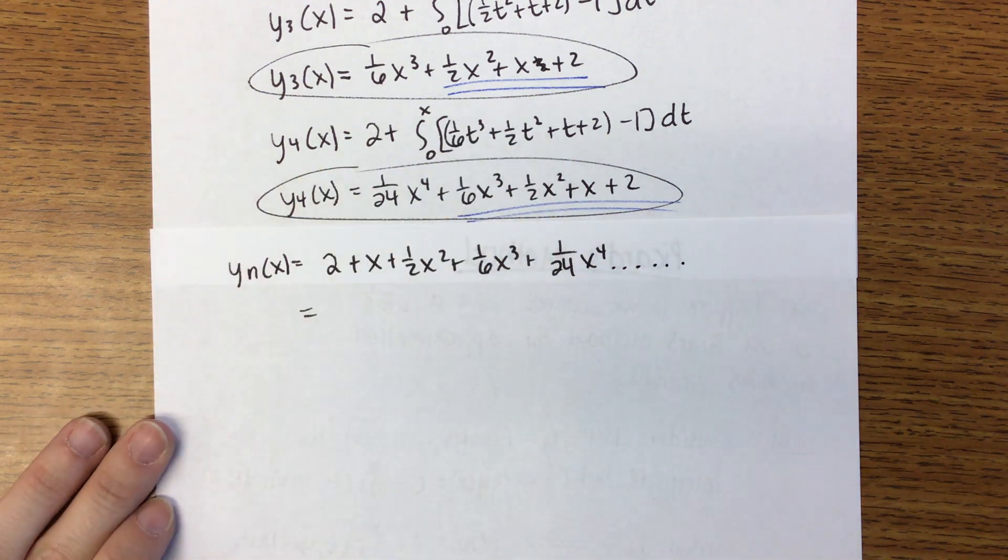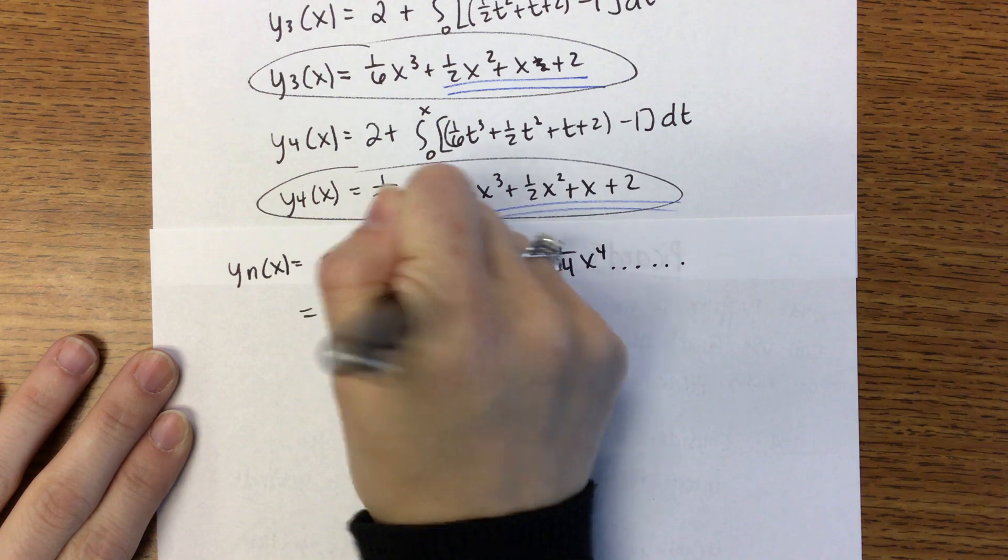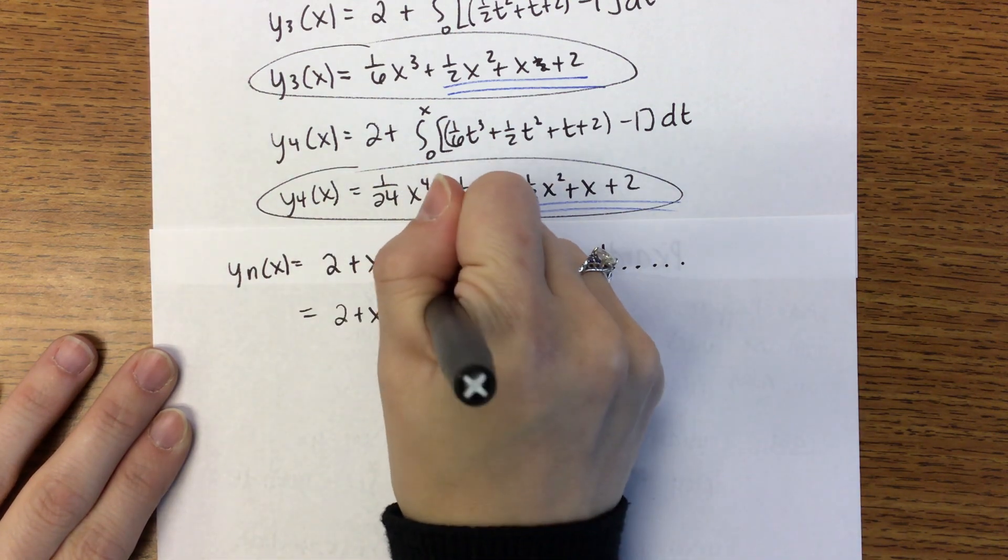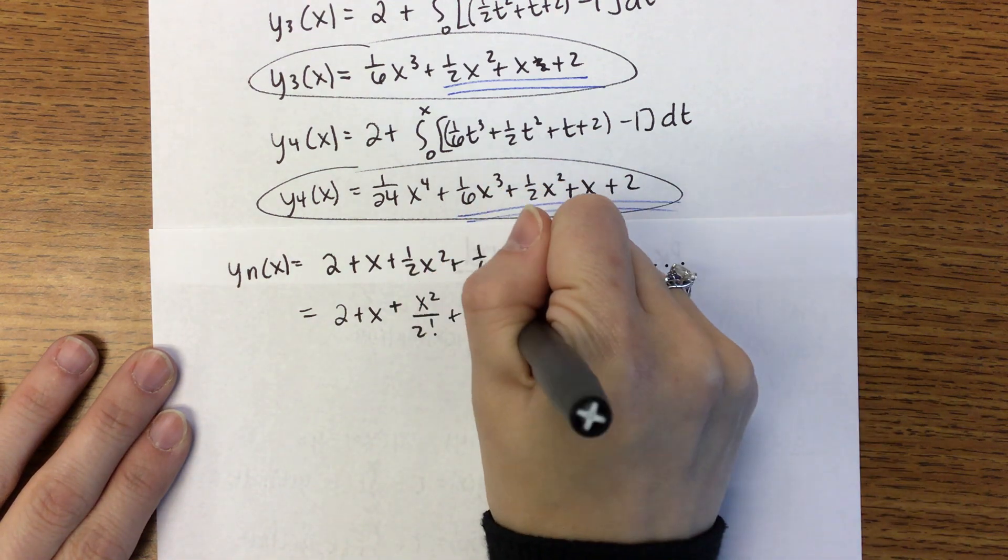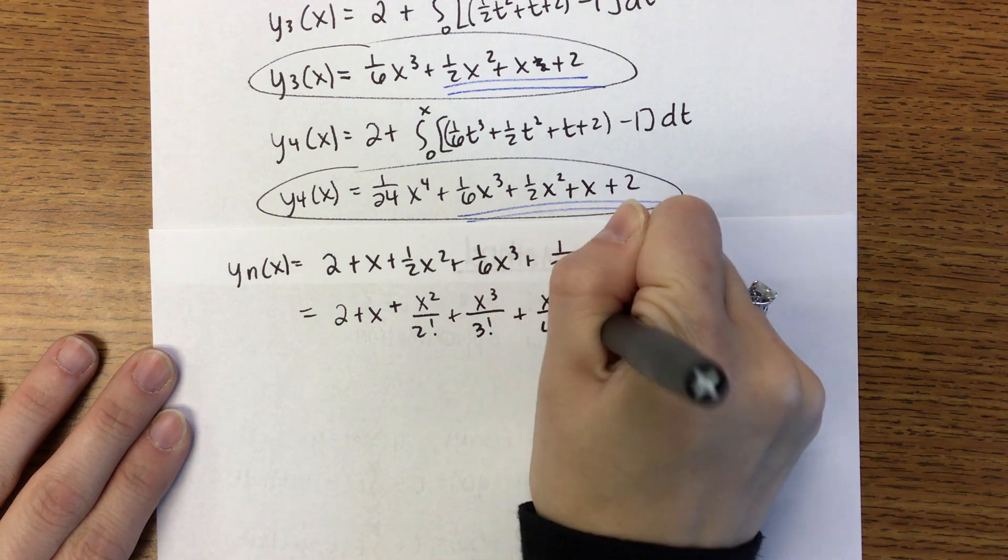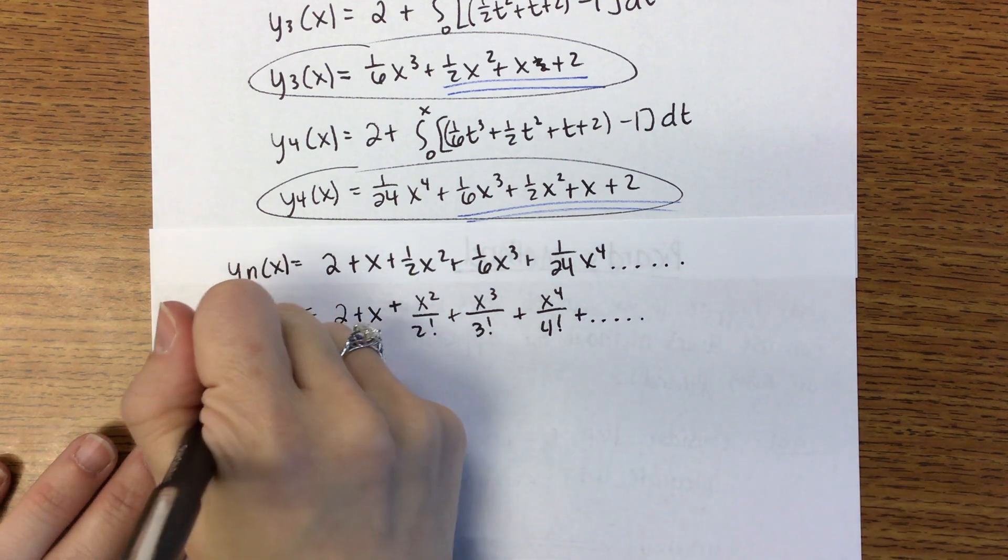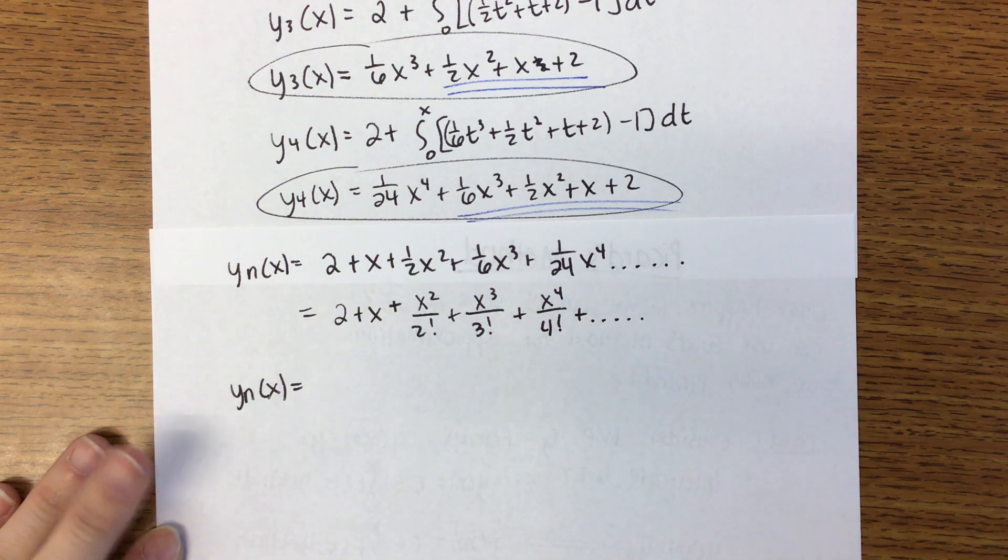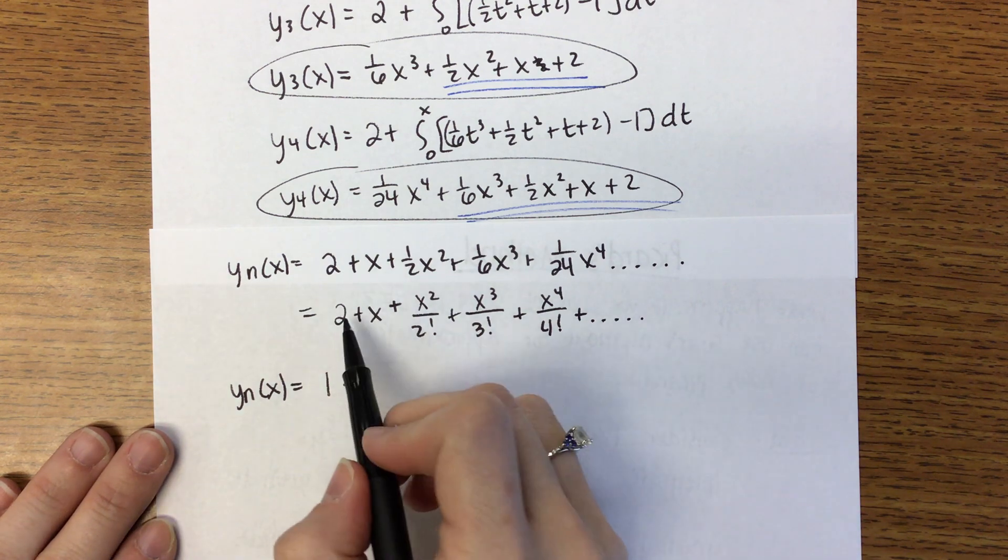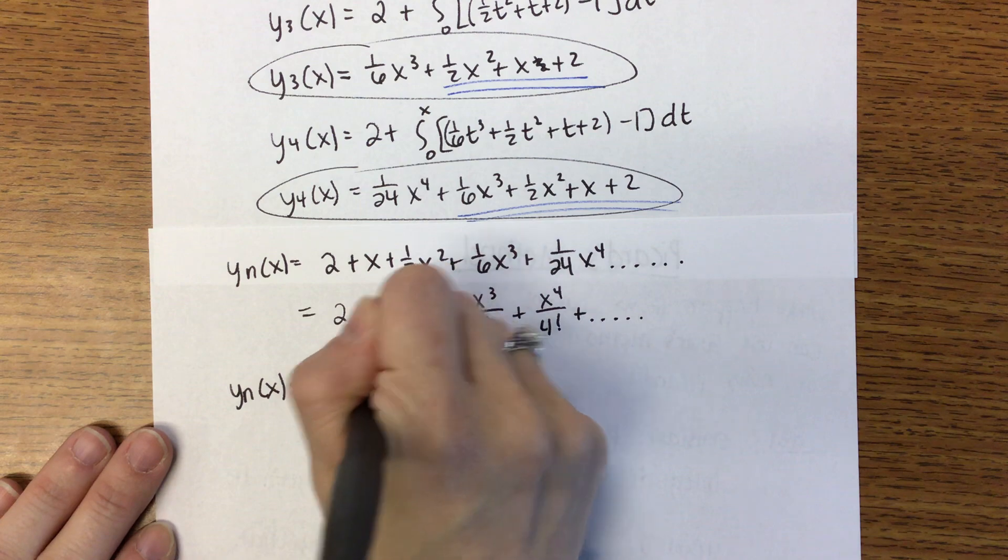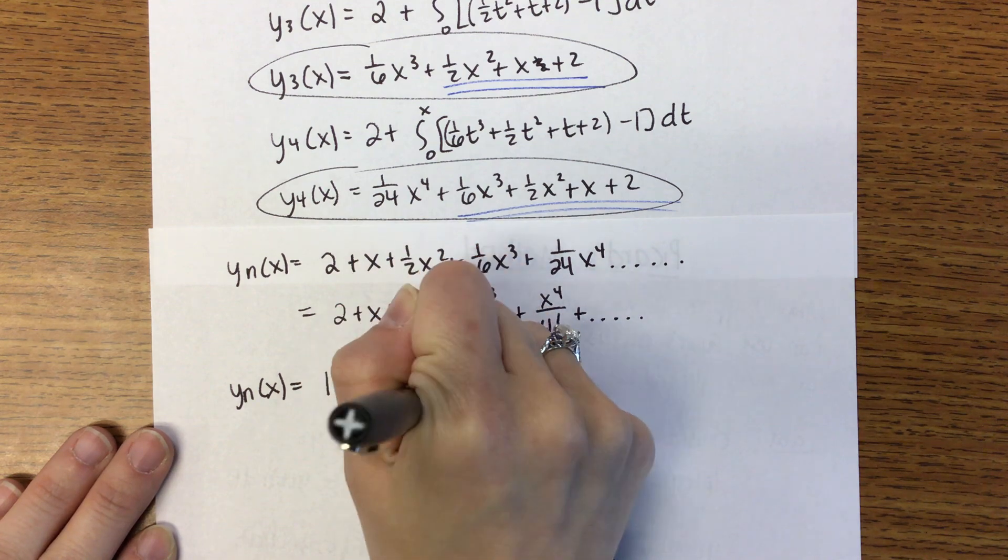It might be convenient to write this in a different way. If I have 2 plus X, this third term is really X squared over 2 factorial, the next term is X cubed over 3 factorial, the last term is X to the fourth over 4 factorial, which looks very close to a power series. If we pull out the 1, so if we split this 2 into 1 plus 1, we'll have 1 plus a power series then. It's the sum from K equals 0 to N of X to the K over K factorial.